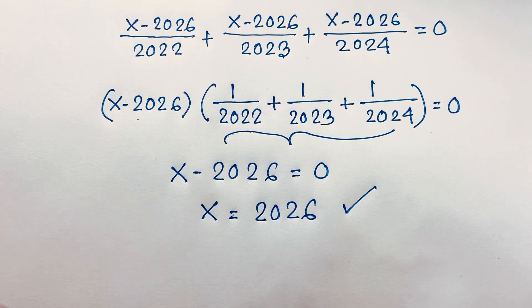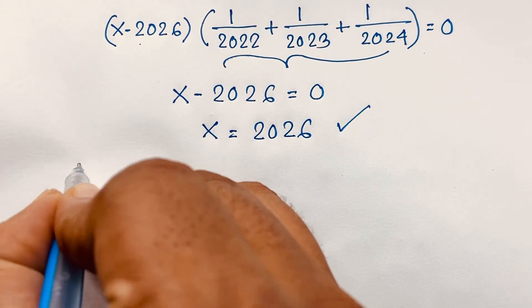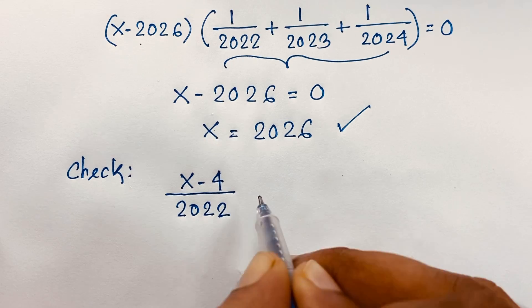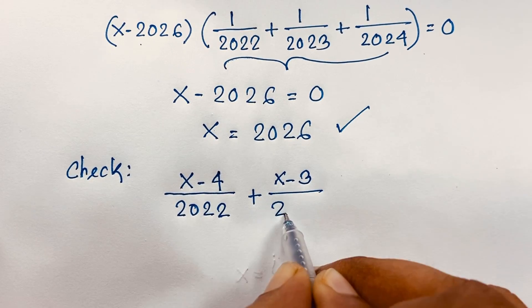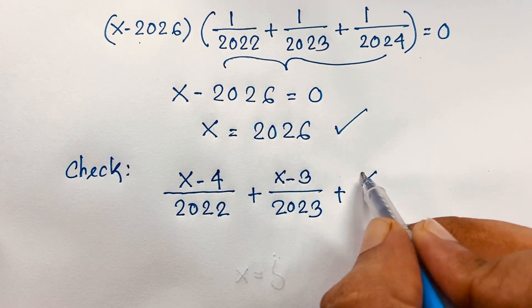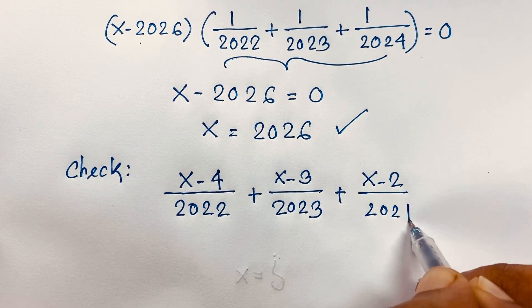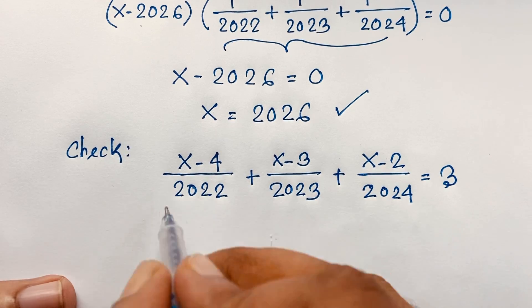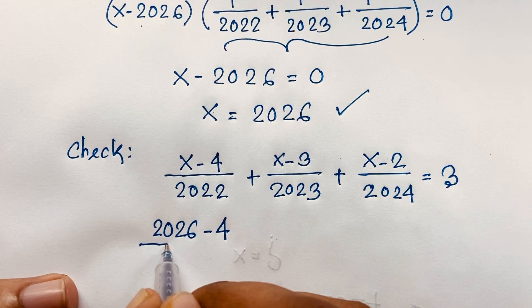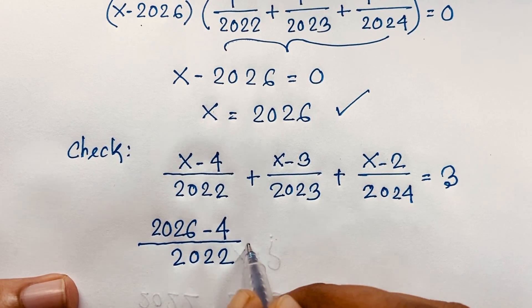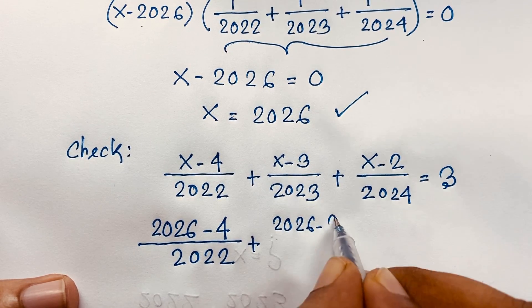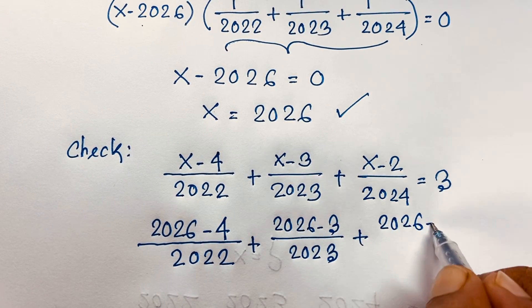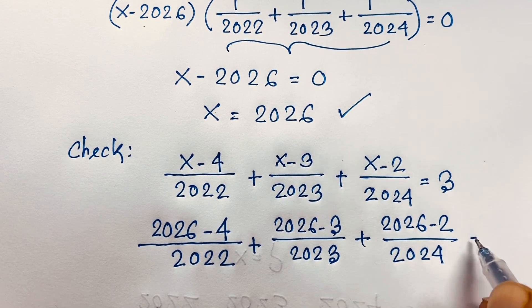Let's verify: substituting x equals 2026 into (x minus 4) over 2022 plus (x minus 3) over 2023 plus (x minus 2) over 2024 equals 3. We get (2026 minus 4) over 2022 plus (2026 minus 3) over 2023 plus (2026 minus 2) over 2024 equals 3.